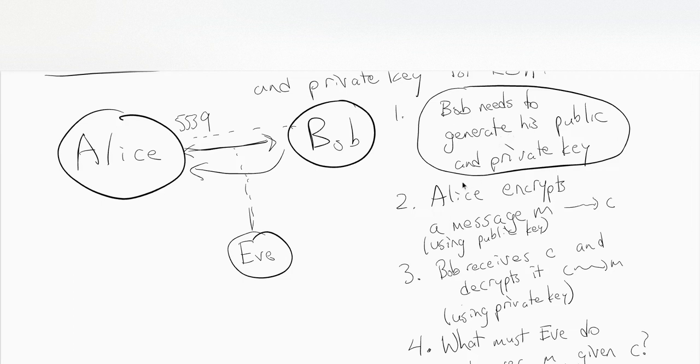The second step is, once we do that, we have to describe how Alice wants to send Bob a message m, some integer, and using Bob's public key, how do we encrypt it and produce some scrambling of m that Eve won't be able to decode.